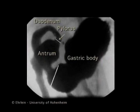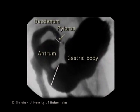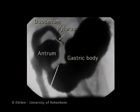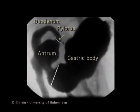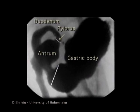Here you see the fluoroscopic picture of the canine stomach. The stomach can be divided into the gastric body and the antrum. The location of the pylorus and the duodenum are also indicated. The peristaltic waves of the antrum represent the gastric pump.